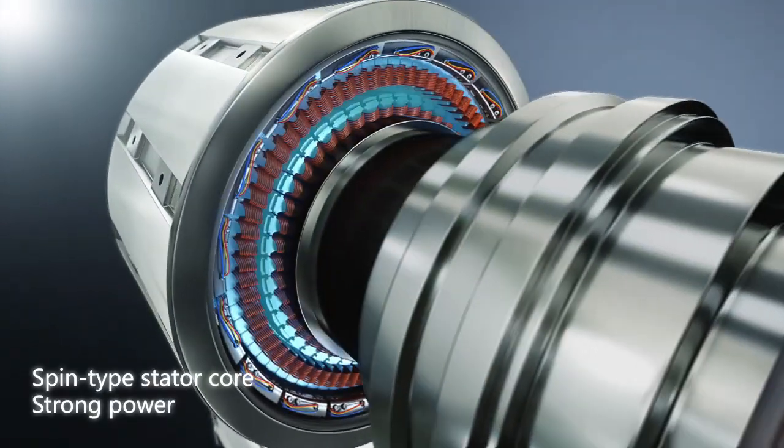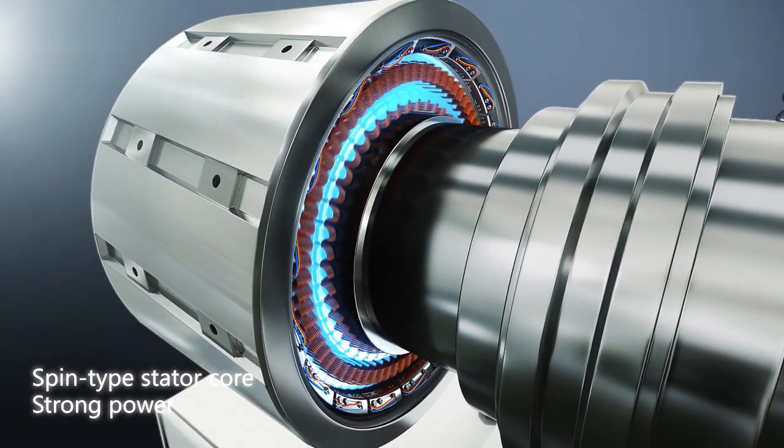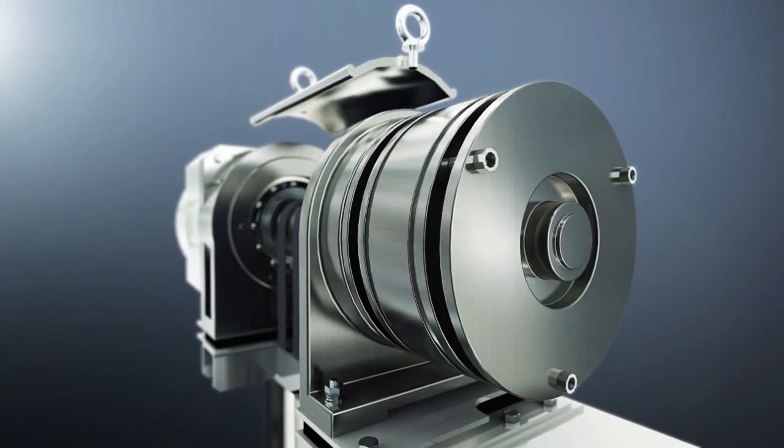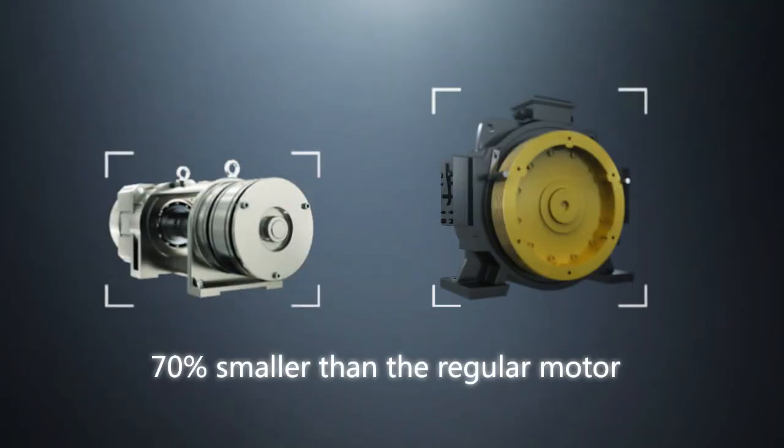With spin-type stratter core, the driving force of traction machine is stronger. Bar-shaped layout is 70% smaller than the regular one.